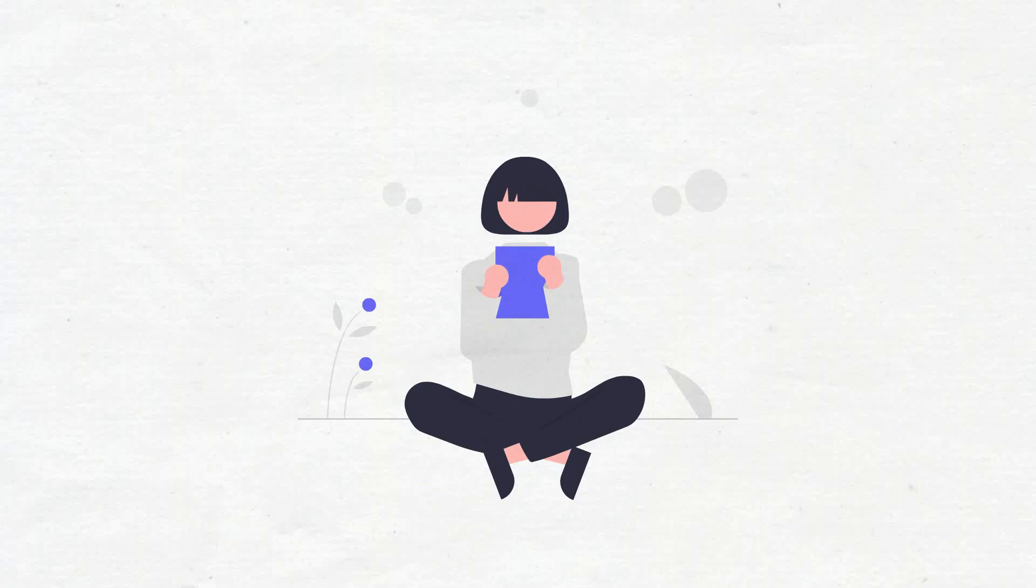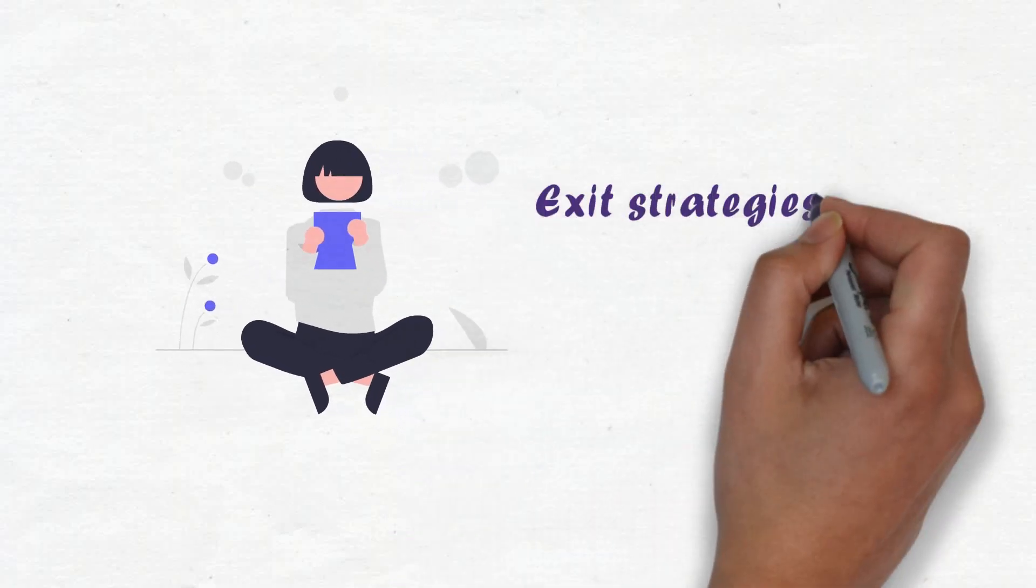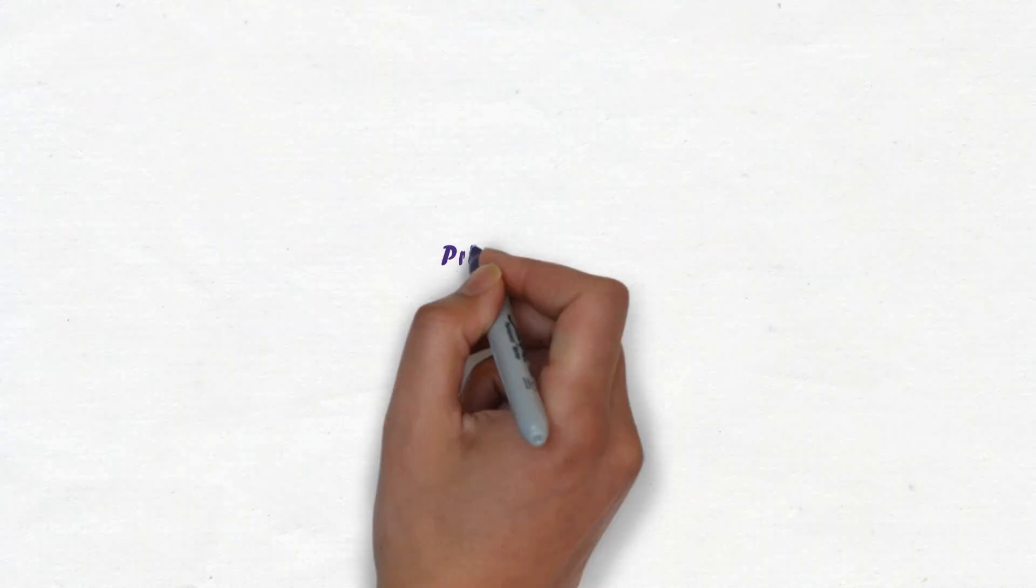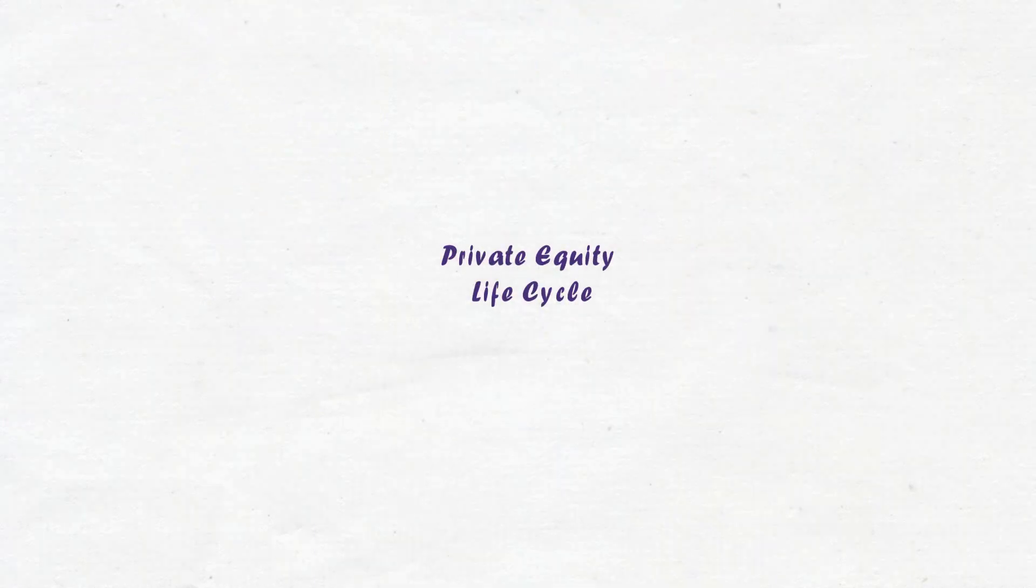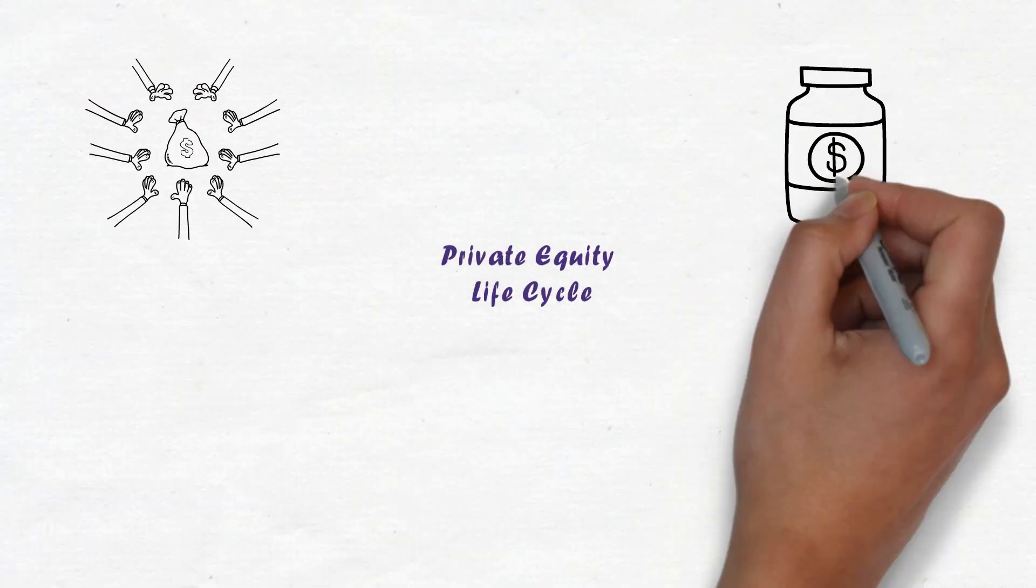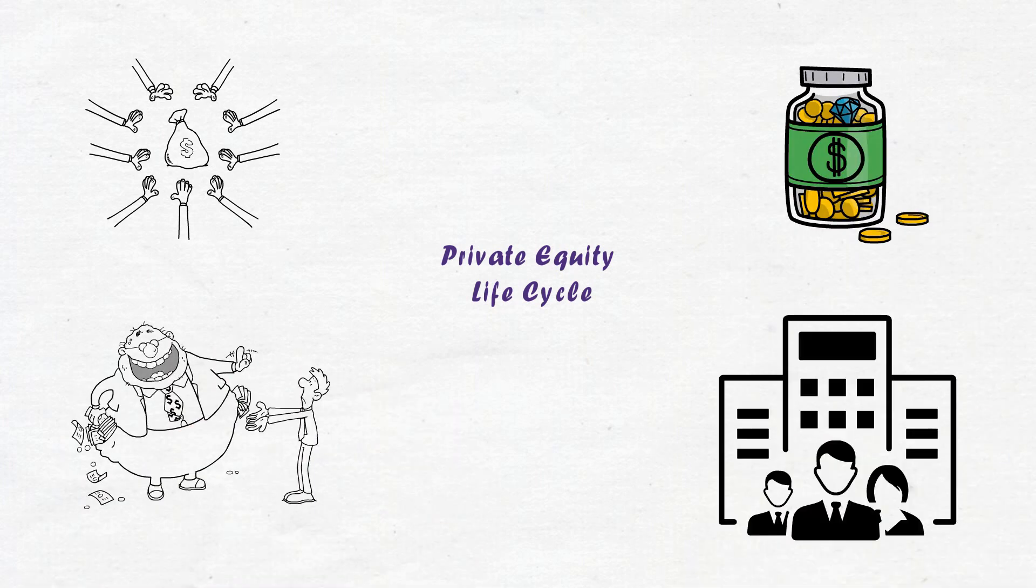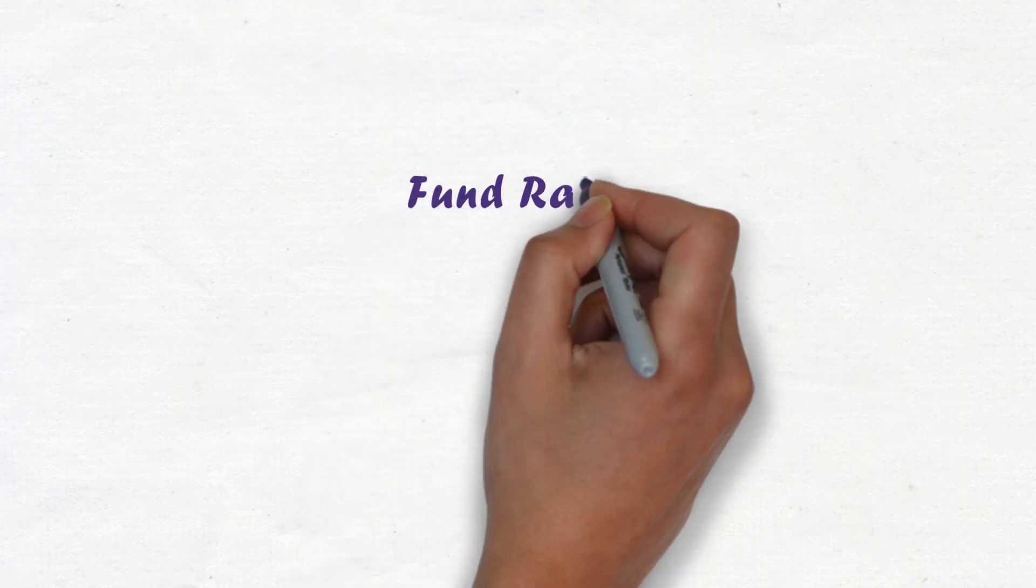Hi folks, today we are going to discuss the exit strategies used by private equity funds. The private equity life cycle has four phases: funding, investing, harvesting, and liquidation.